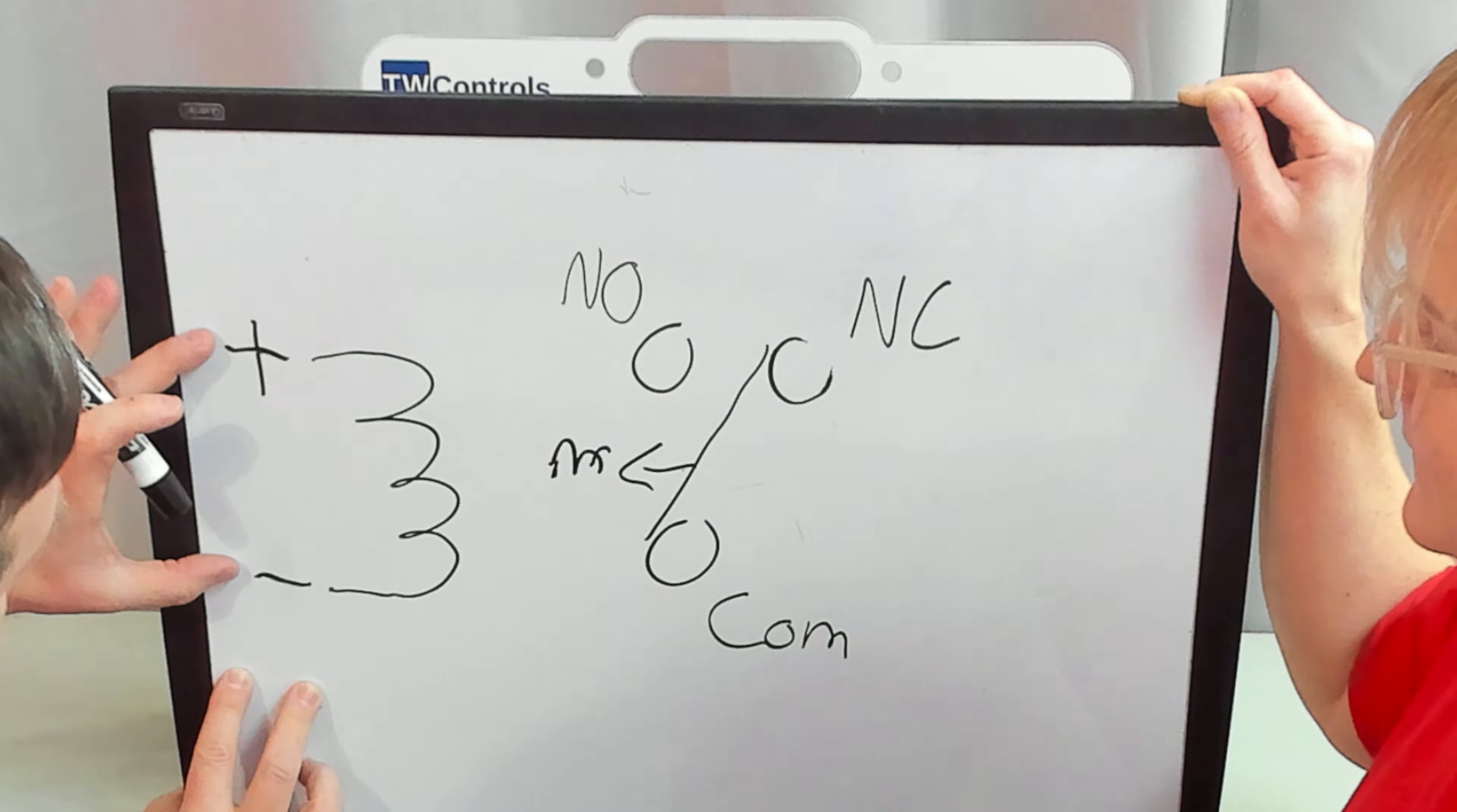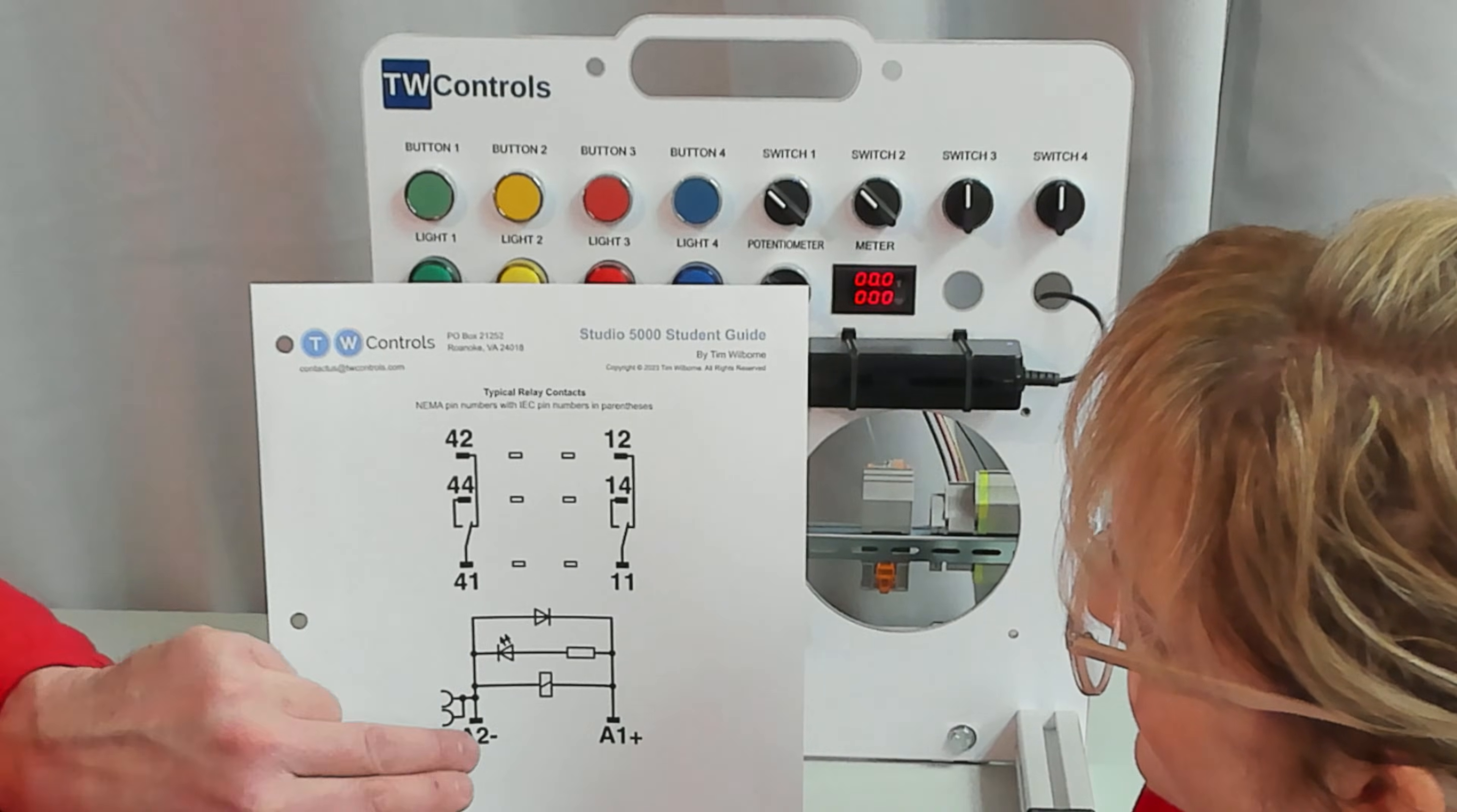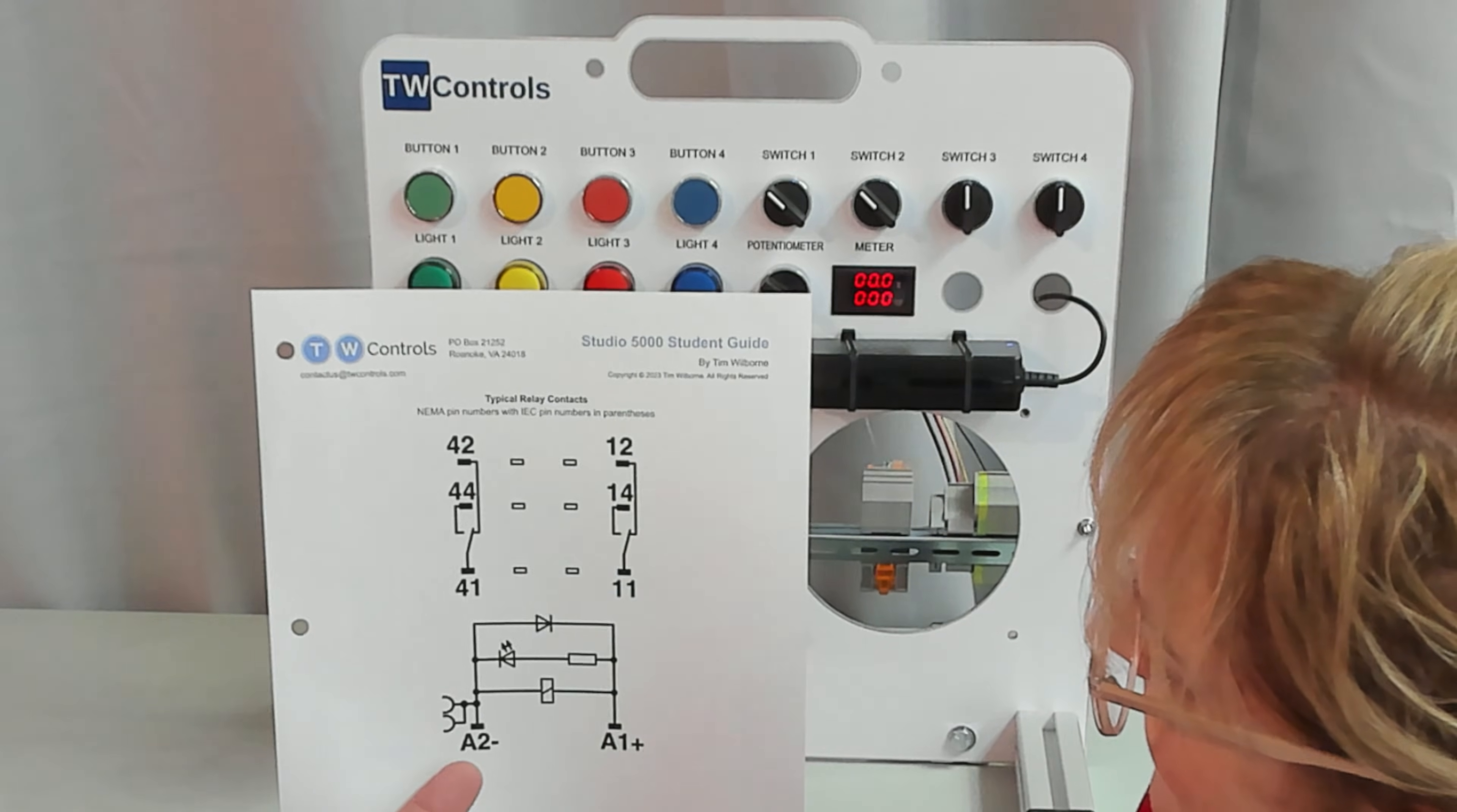So let's start by applying plus and minus 24 volt to our coil. Here's a typical relay diagram. And this bottom part is the coil, and this top part is the contact. So in this case, A1 is the plus, A2 is the minus.